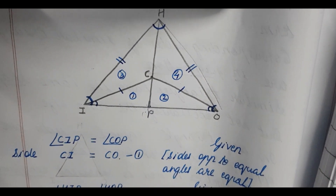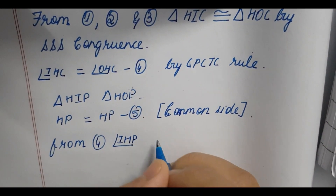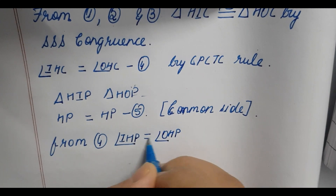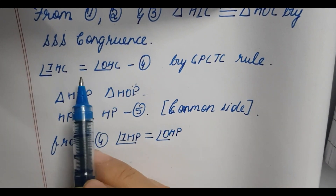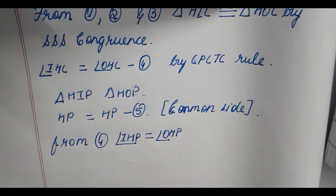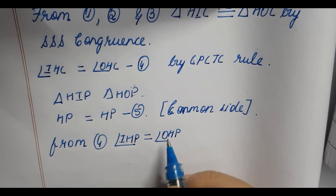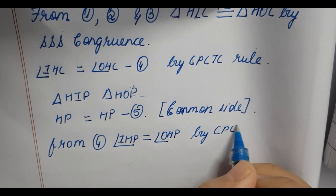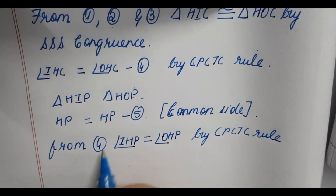Now, angle IHP and angle OHP will be equal. So IHC and OHC are equal by CPCTC rule, and therefore IHP will be equal to OHP. This is also by CPCTC rule, and this is rule number 4.